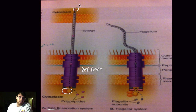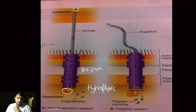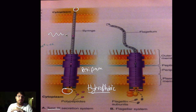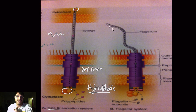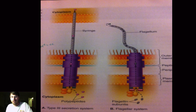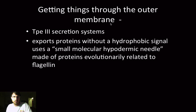The type 3 secretion system channels proteins directly into the host cell cytoplasm. The reason is that these are hydrophobic molecules, so we don't want them floating around in aqueous space — all life originated from water, so they'll spend as little time in water as possible. Right next to it in the diagram is a flagellum subunit made of flagellin. The point is that anything sticking out of a cell is really just a hollow protein tube.